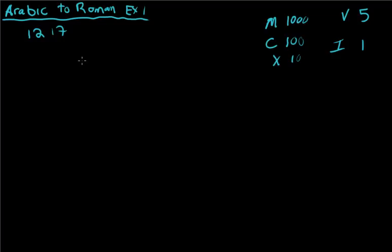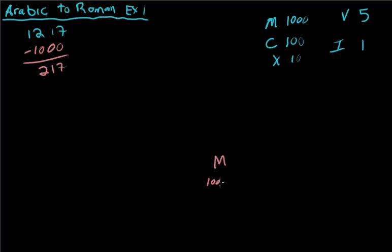The way I like to do this is using a lot of subtraction. First thing I notice is I can take away a thousand from 1217 and still need a bigger number. So if I do 1217 minus 1,000 I get 217, and because I took away a thousand I start the number with M. I always like to keep track of everything right below the number so I can add it up at the end and make sure I didn't make any mistakes.